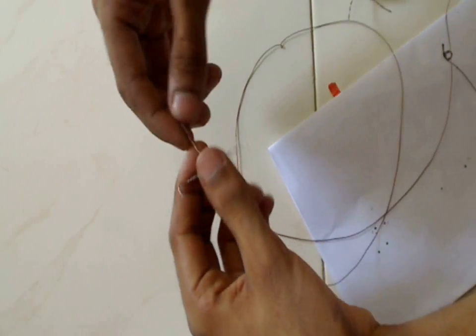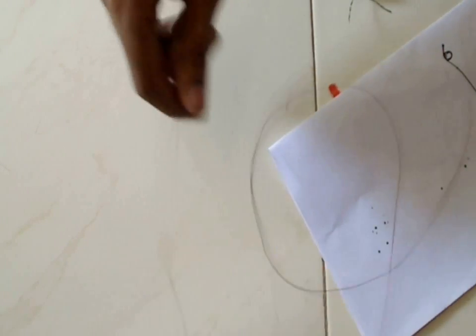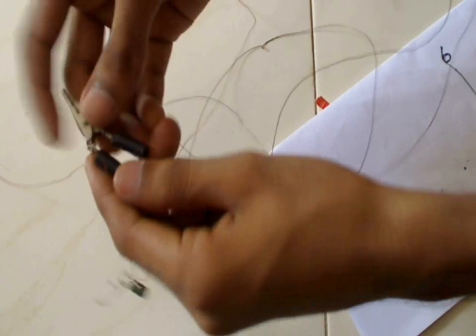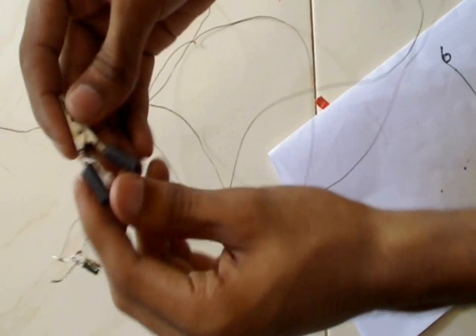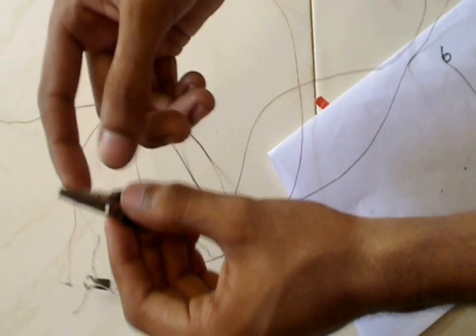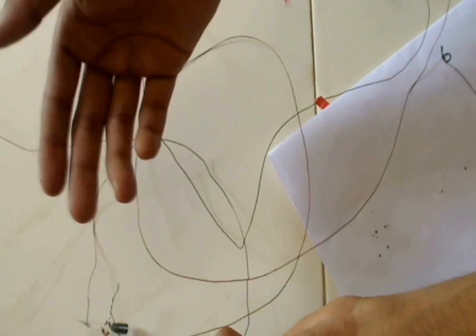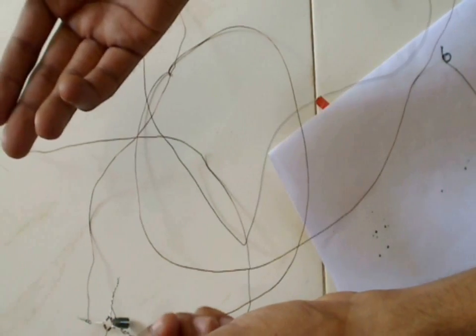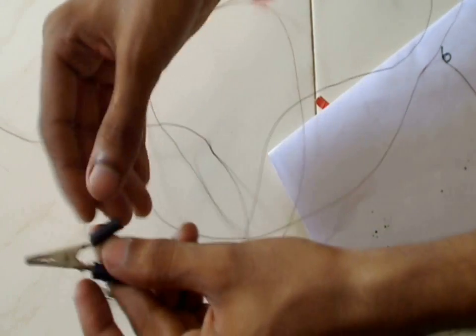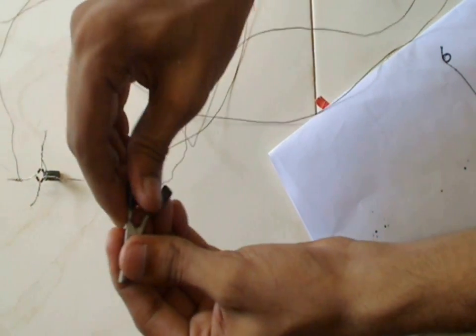Coming to the next end, the other AC end of the rectifier is connected to an alligator clip so that I can connect this end to the grounding system or the earthing system. This should be properly grounded because we are considering the potential of the air with respect to the ground. So it is very important to ground the system properly.